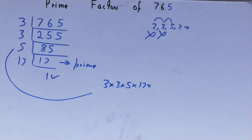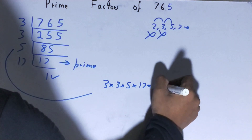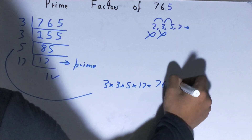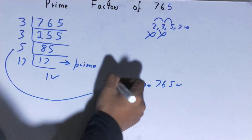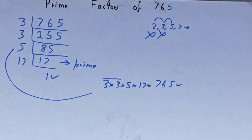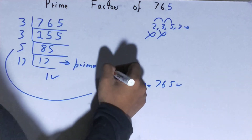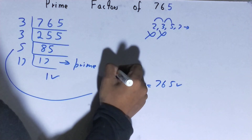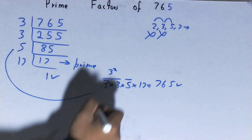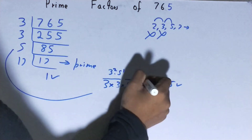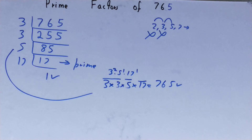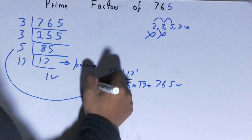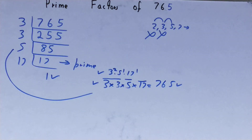If you want to check whether it is correct, you can multiply these factors, and if you get 765 back then your calculation is correct; if not, you need to recheck. You can also rewrite it in a different way: you have two 3s so write it as 3 raised to power 2, one 5 so write it as 5 raised to power 1, and one 17 so write it as 17 raised to power 1.